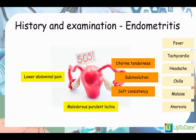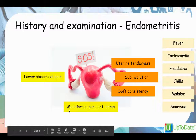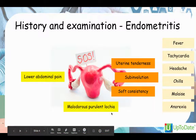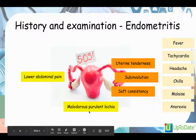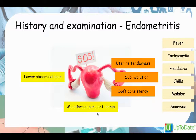In endometritis there will be lower abdominal pain, and you can ask about vaginal discharge. After pregnancy there's a normal discharge known as lochia - it will be bright red for about three to four days, then red to brown for the first four weeks, then white or yellowish. However, it shouldn't be malodorous or purulent, so ask whether the discharge has a bad odour.